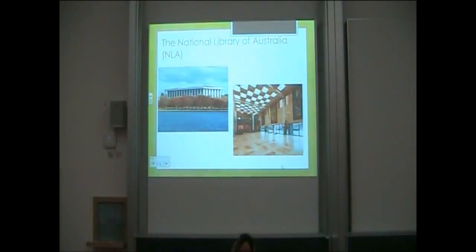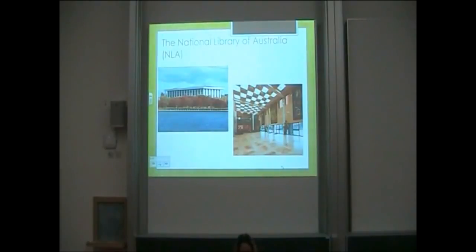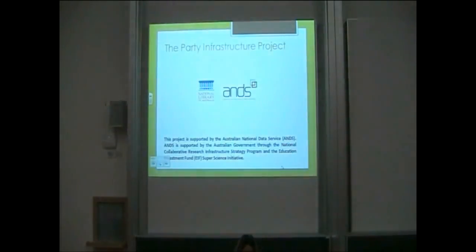The National Library of Australia is in Canberra. If you thought the capital of Australia was Sydney or Melbourne, it's actually Canberra, which is very small. The National Library is there by the lake — it's a legal deposit library, and it also has a resource sharing division which supports other Australian libraries, including the higher education research sector.